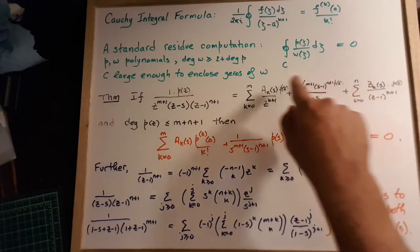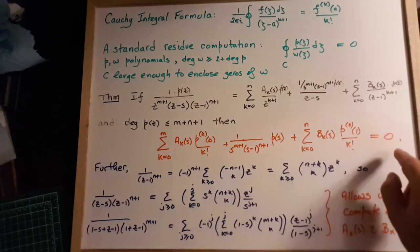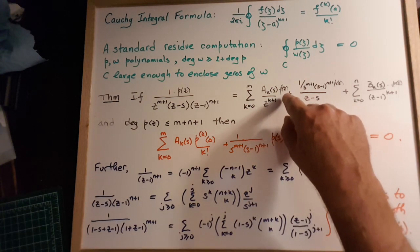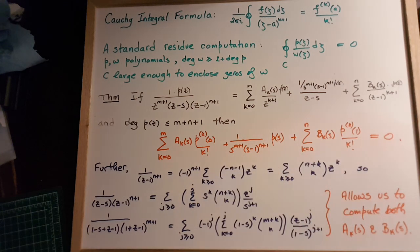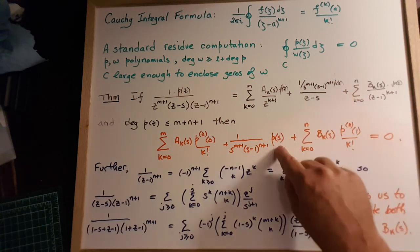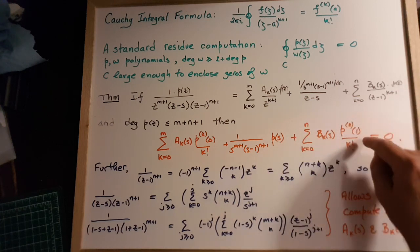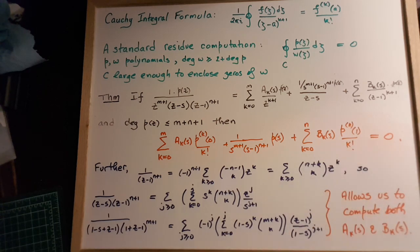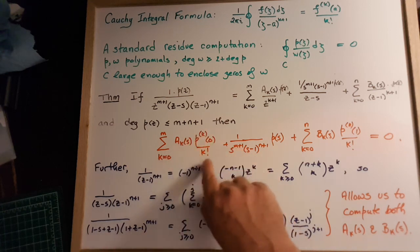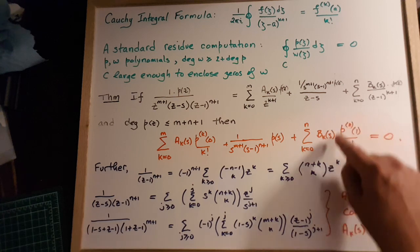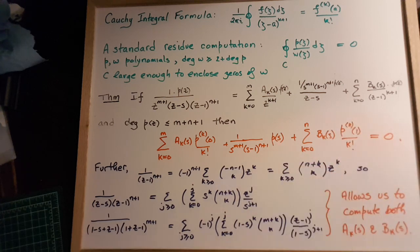That means the sum of all these integrals over large enough contours equals 0. The integral over a contour containing 0 gives us the kth derivative evaluated at 0 divided by k factorial. The term over z minus s gives us the value of the polynomial at z equals s. And the remaining terms give us the values of the kth derivatives evaluated at 1 divided by k factorial.